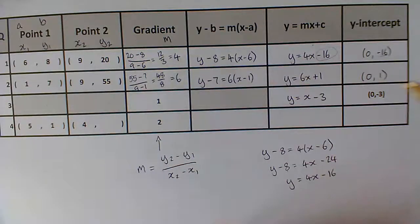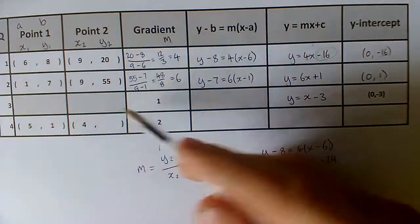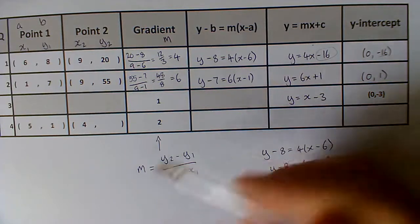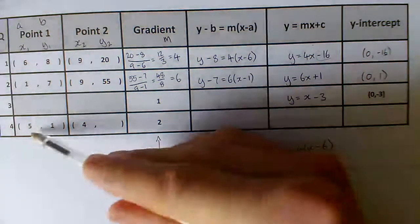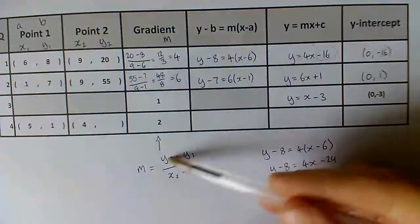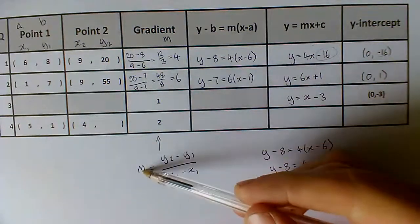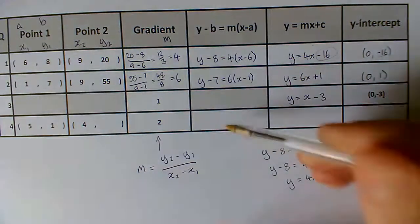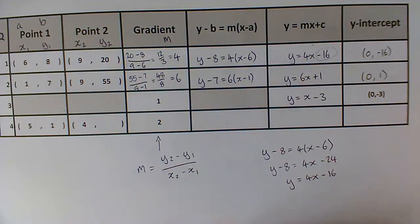So, this one down here is the very last question on the table that you're going to get. It is a challenge question, a bit of an extension question. So, I'm not going to run through how to do it, but try and think. Put in the values you do know, these three values, into your gradient formula and put 2 in as your gradient and see if you can figure out this missing coordinate. And then you can do the rest of the question once you've got that.